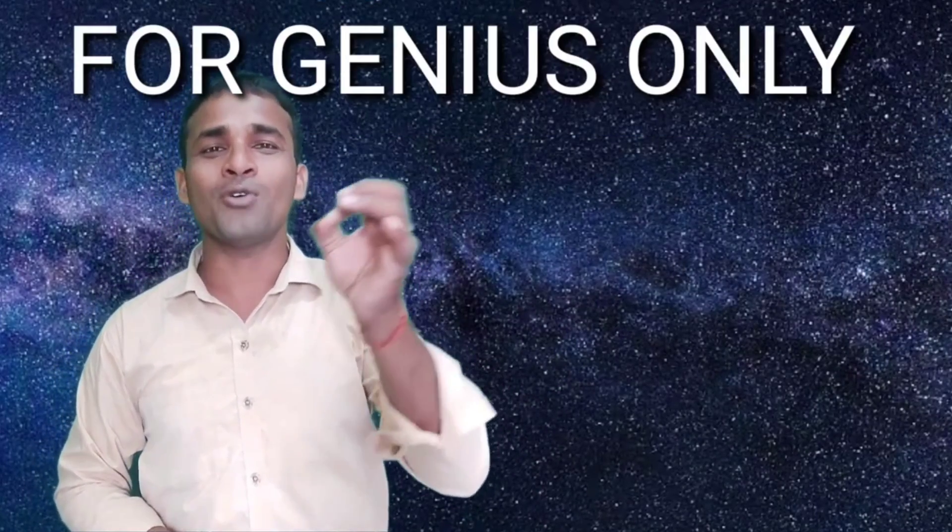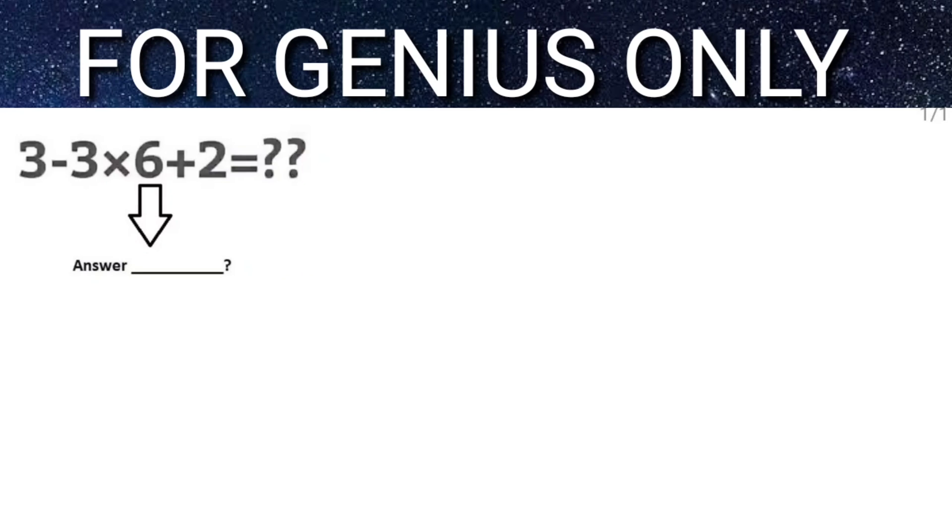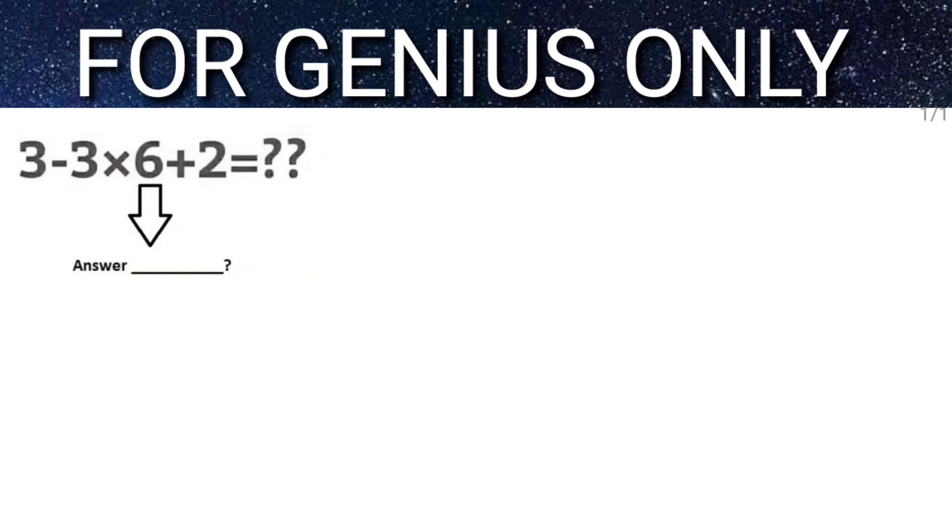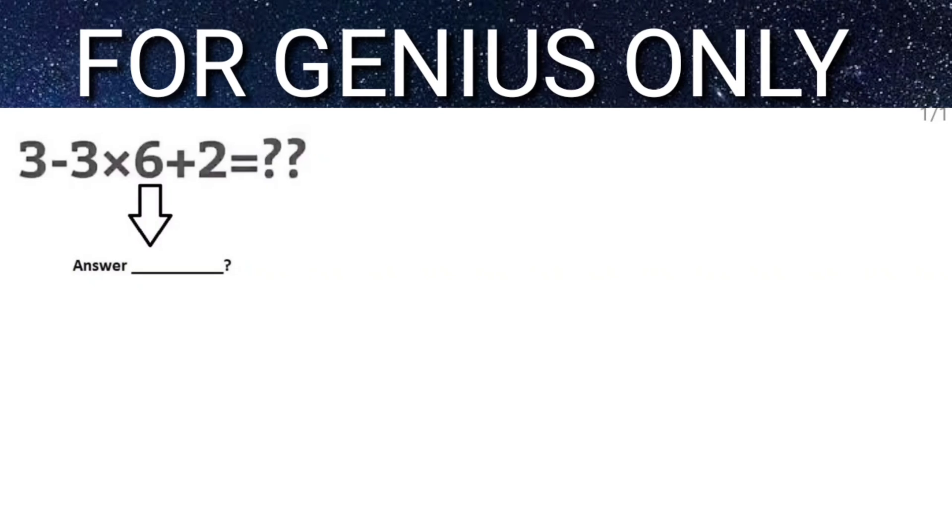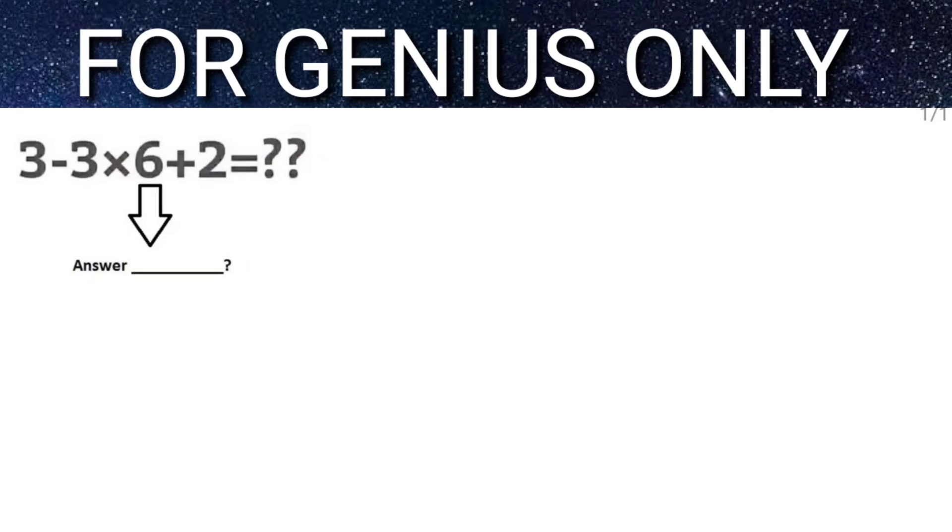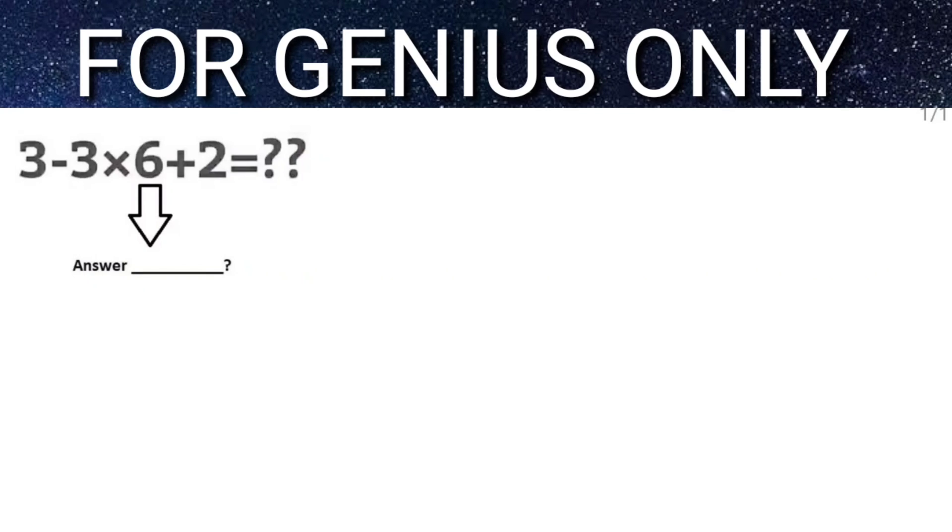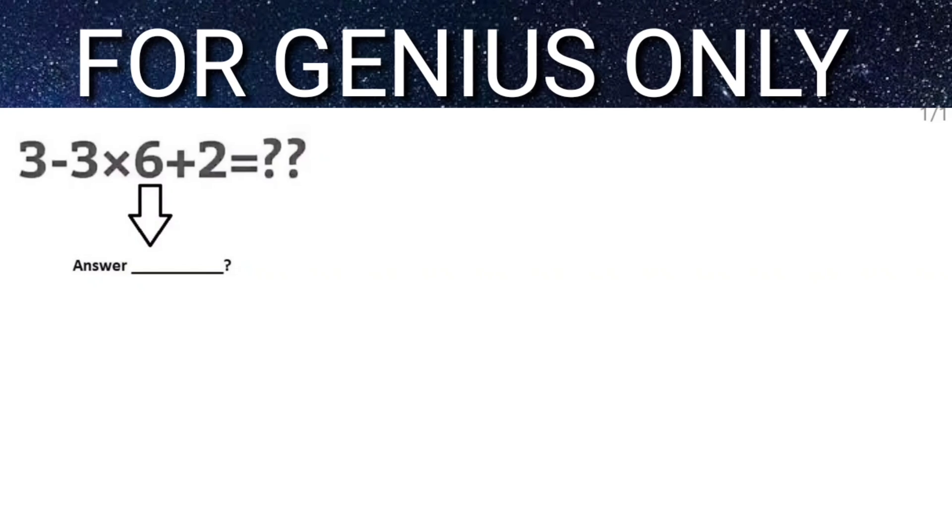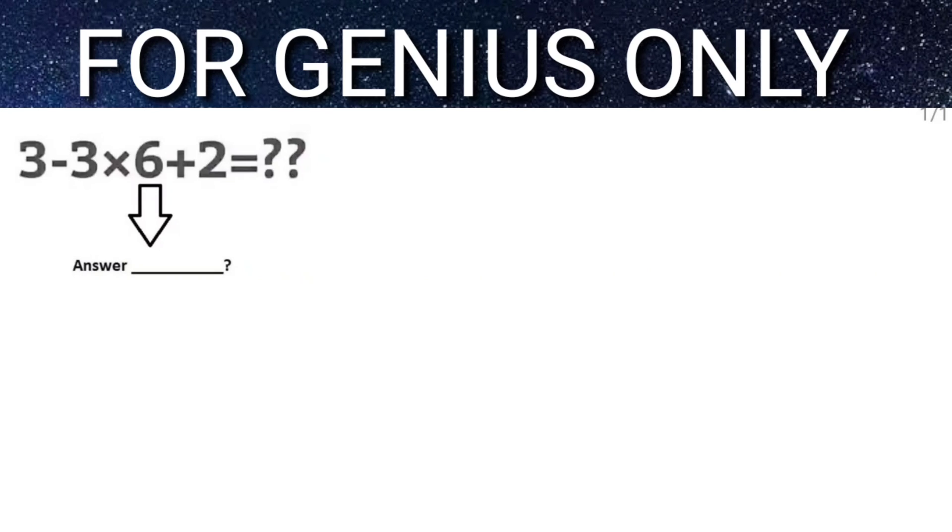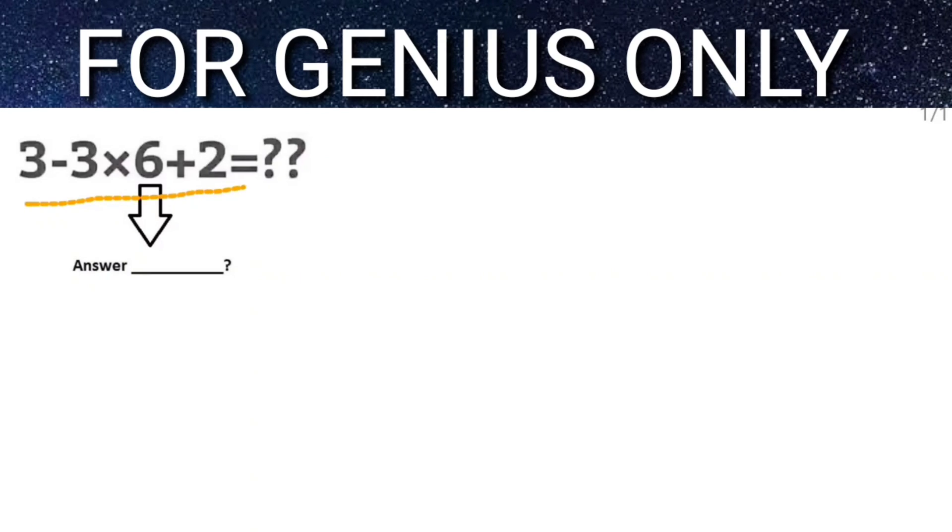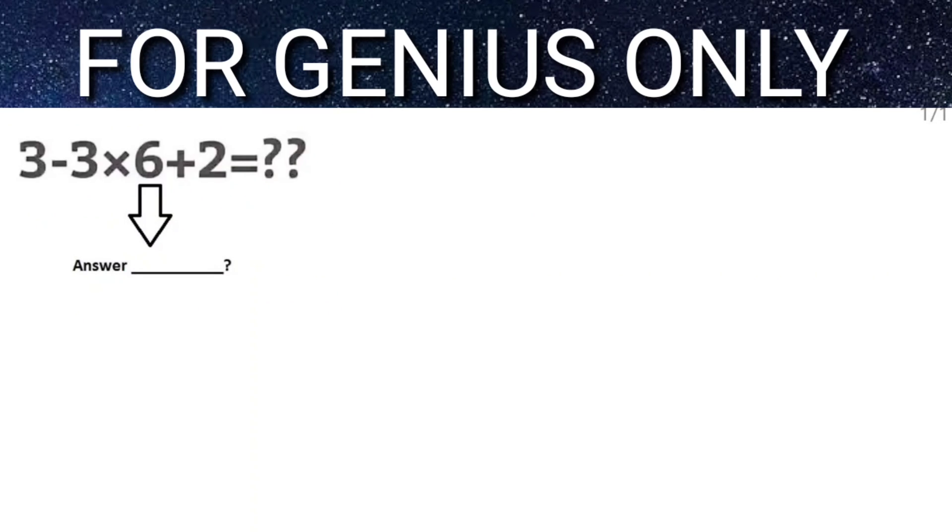See friends, here's the equation. Now you can solve it very easily, but most people, 90% of people, fail to give the exact answer. The equation is: 3 - 3 × 6 + 2 = what? Very simple equation, but many people fail to give the exact answer.